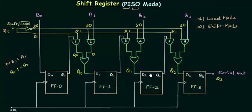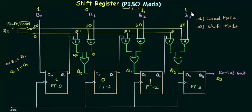Let's take an example with random bits 1, 0, 1, 1. During the load mode, 1 is stored in flip-flop 0, 0 is stored in flip-flop 1, 1 is stored in flip-flop 2, and 1 is stored in flip-flop 3 — so the parallel storing of data 1, 0, 1, 1 is complete. When we switch to shift mode by changing the input to 1, data shifts and the output is 1, because 1 was the value stored in flip-flop number 3.